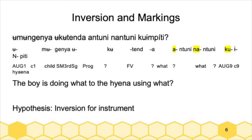Andrew mentioned it might be something to do with the type of object — in one case you have the hyena as a direct object, and in the other the ugali might be an oblique object. That might have something to do with the hierarchy — direct, indirect, and oblique objects — and what you can do to each of them. This might be a discussion to have with Andra, who had done a little of this the previous year.